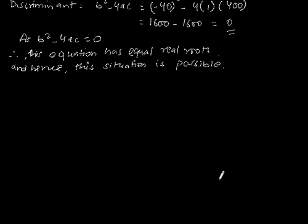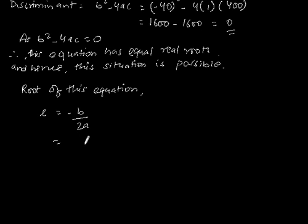Now let's find the root of this equation. L = -b/2a. Putting the values of b and a: L = -(-40)/(2×1) = 40/2 = 20.